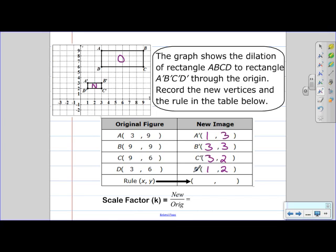So now we have all of our new locations. We need to now figure out what is the scale factor so that we can determine the rule. So it's new over the original is our scale factor. And so we can pick basically any point.